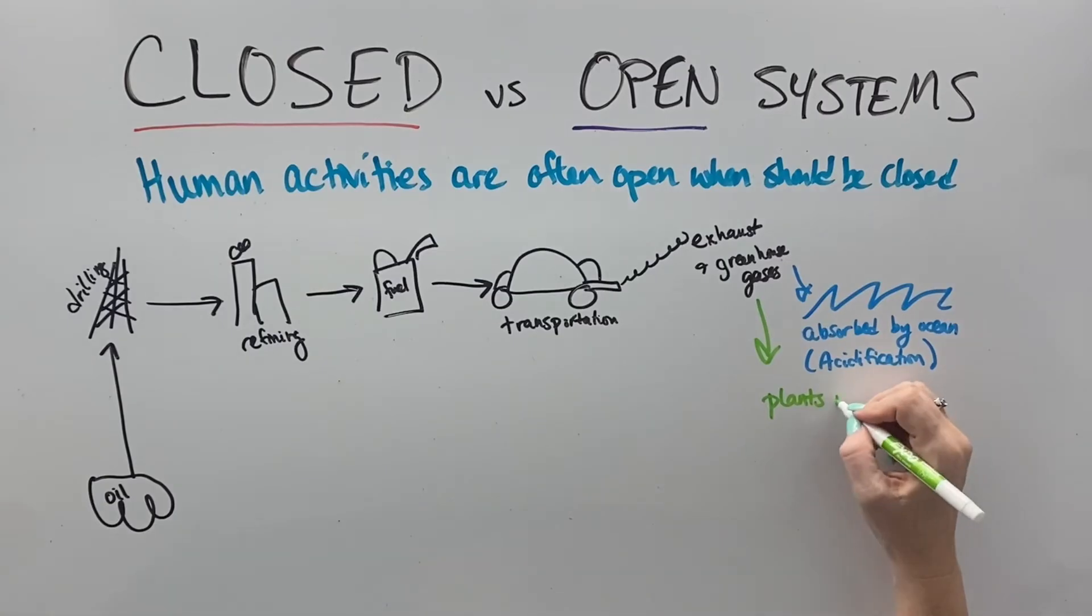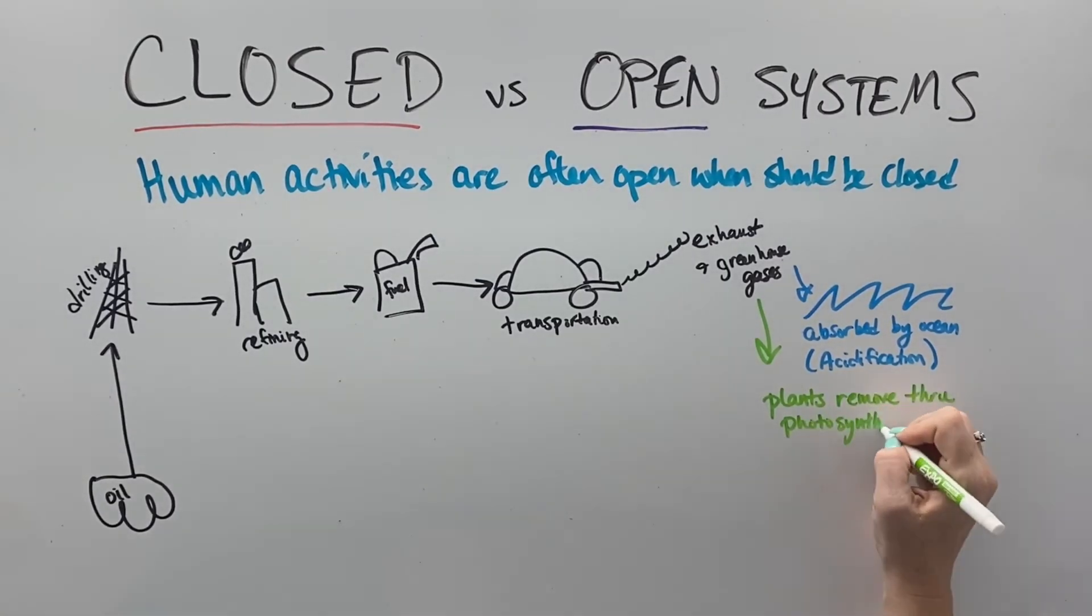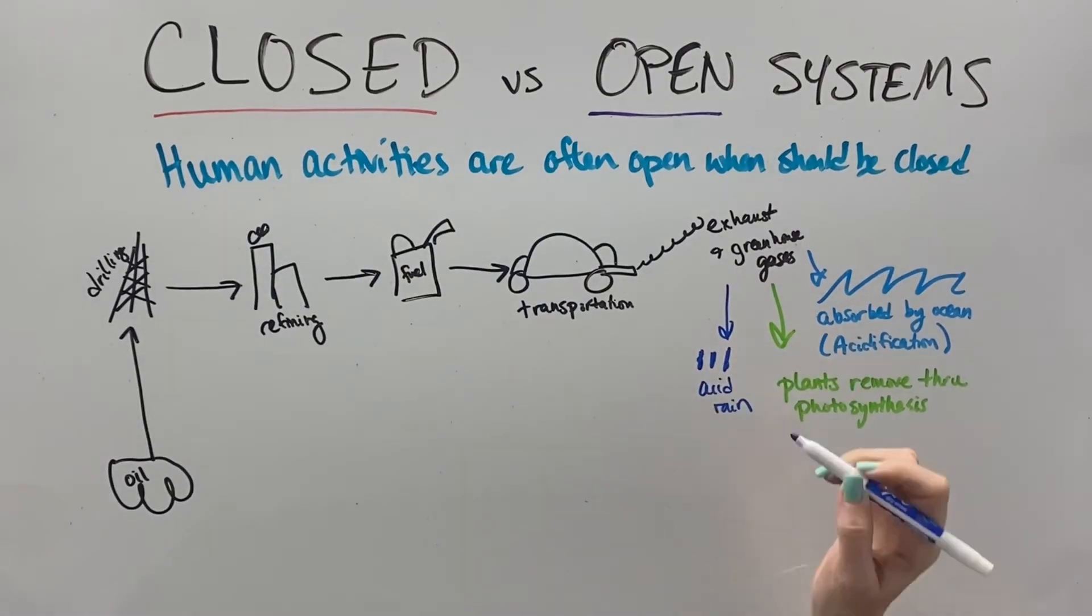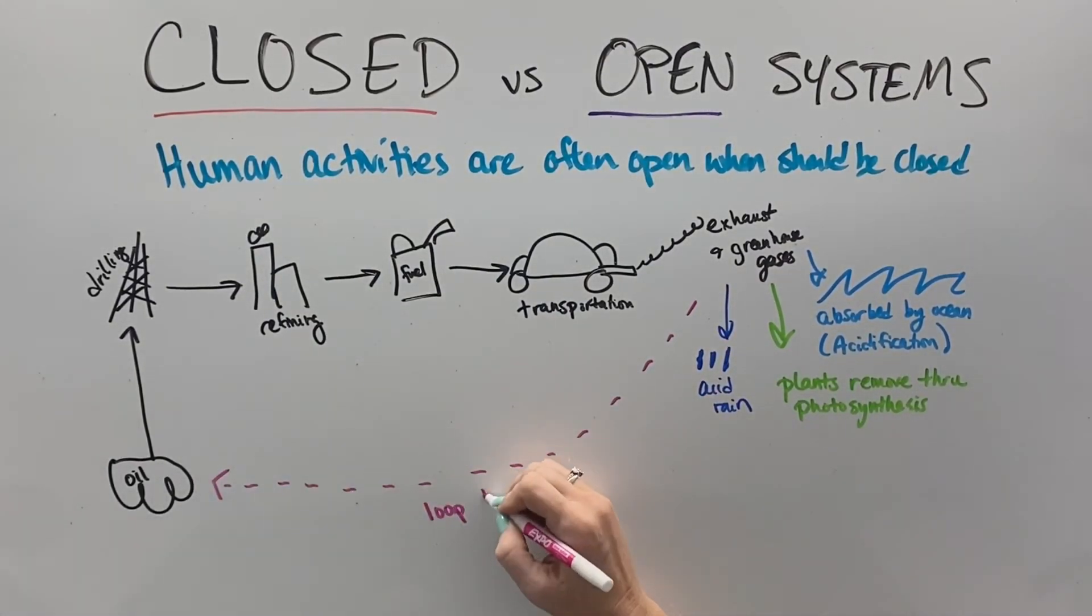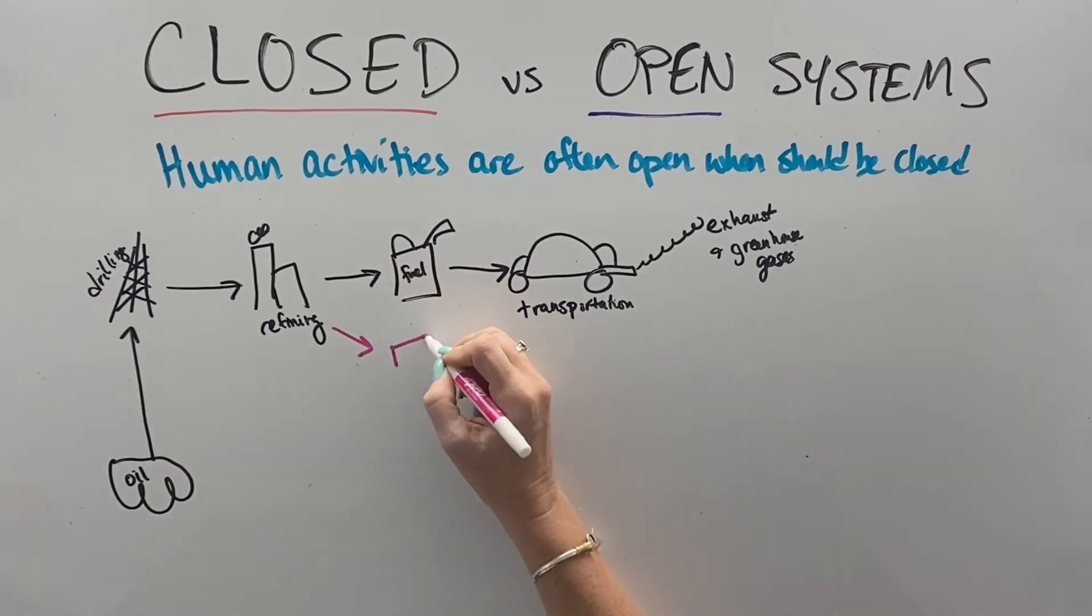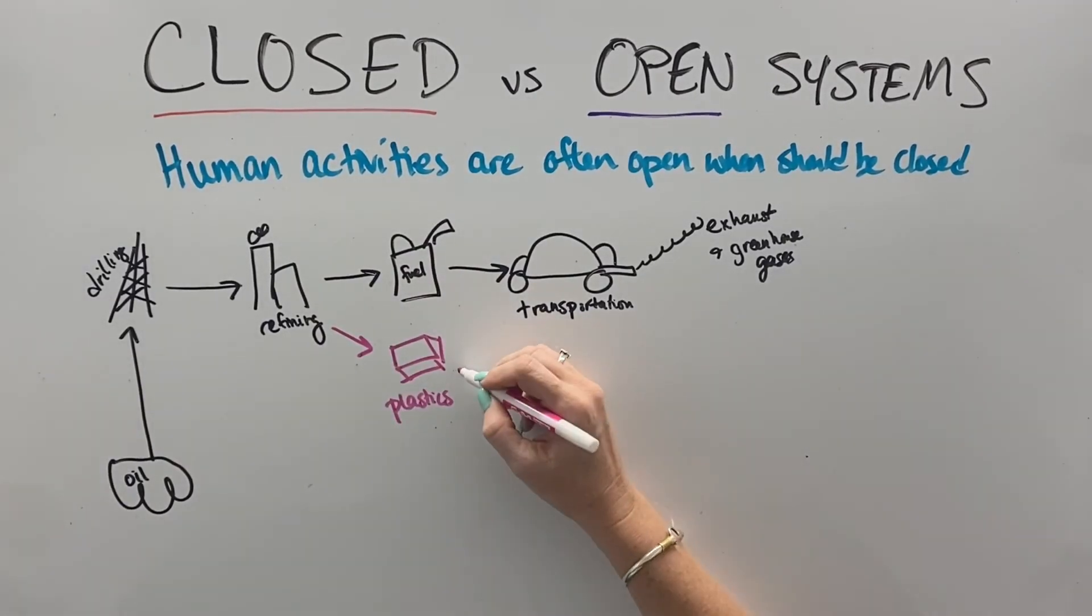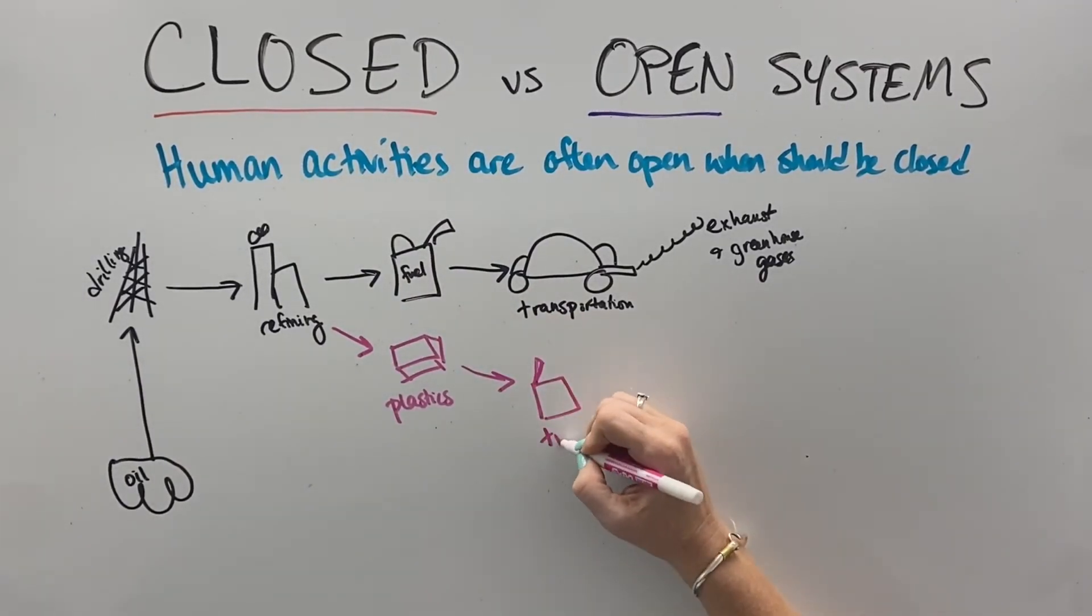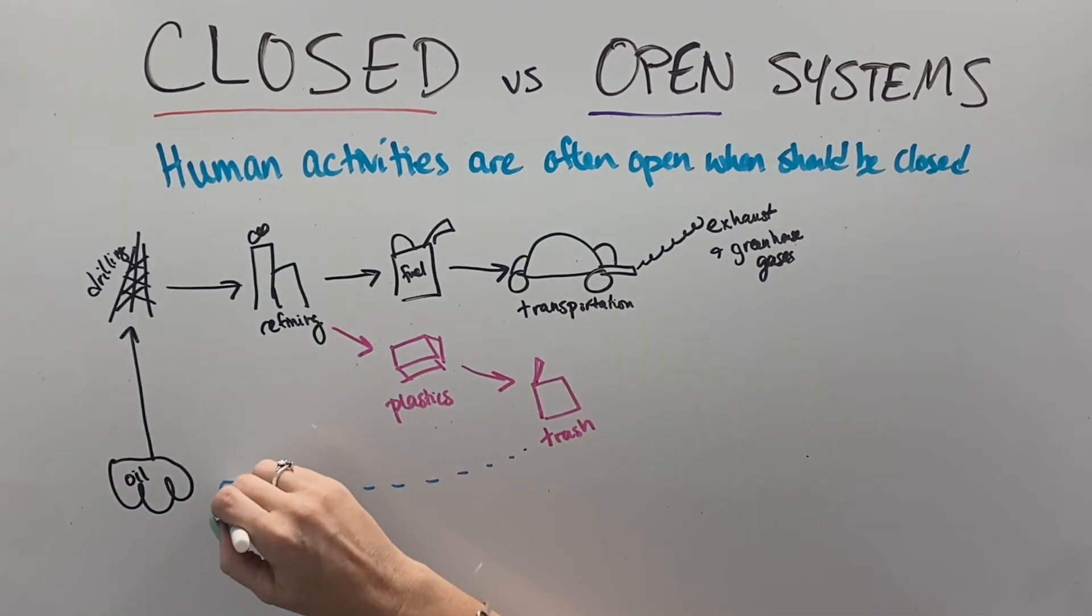Then we get the plants who take some of that CO2 out of the air and then other greenhouse gases turn into acid rain, and that matter never cycles and closes that loop back up. We also refine plastics and we buy the plastic things and we throw them in the trash and that loop never goes back into that oil. So we constantly have all these open systems.